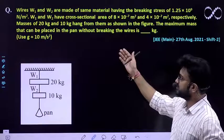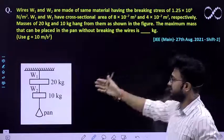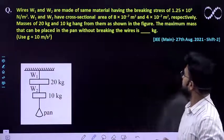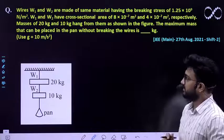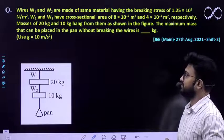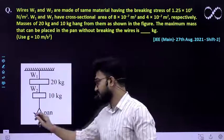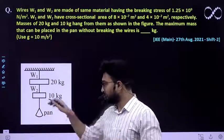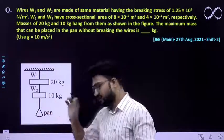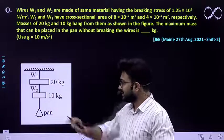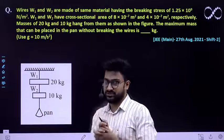Masses of 20 kg and 10 kg hang from them as shown in the figure. The maximum mass that can be placed in the pan without breaking the wire is what you need to find - the mass which can be put on the pan so that it may achieve breaking strength.